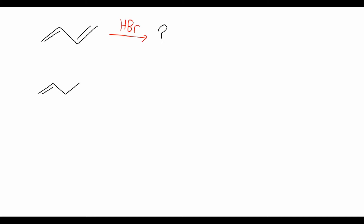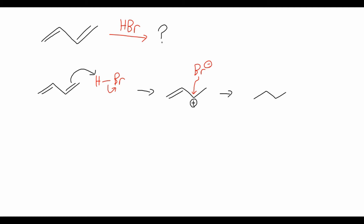We start with our conjugated diene and HBr. The first step is the electrons in the pi bond attacking the hydrogen on HBr, which cleaves the HBr bond to give us a carbocation. Because it's a symmetrical diene, it doesn't matter which double bond we choose for this first step. Because this forms a carbocation, we're going to have Markovnikov addition, so the carbocation forms on the secondary position rather than the primary carbon. The bromide anion from the first step then attacks this carbocation, producing a compound where we have the terminal alkene and the bromine on the secondary position, with the hydrogen from the first step on the primary carbon.